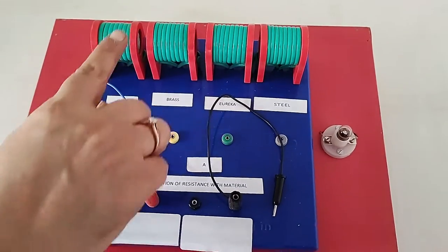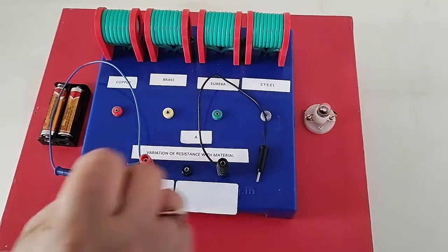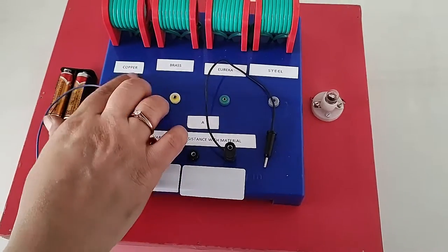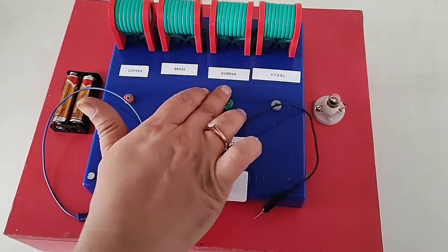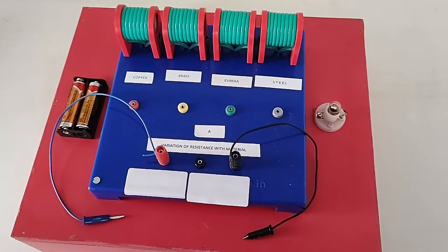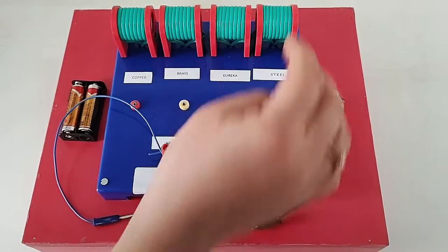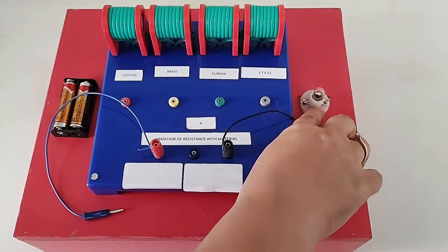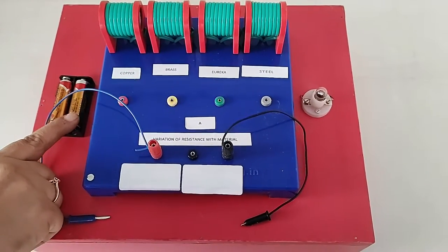Here we have prepared different coils of four different materials: copper, brass, eureka, and steel. These four different materials are connected in parallel with the circuit, where a bulb is there, cell holder with cell. This is the power supply.